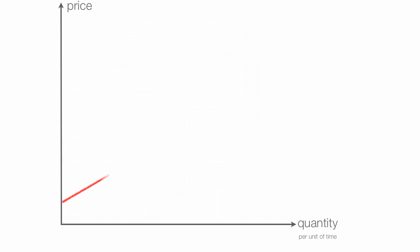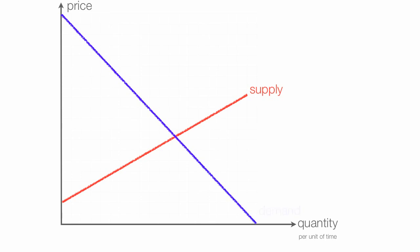I'll put price along the vertical axis and quantity along the horizontal axis. I'm going to put in a supply curve and a demand curve. Equilibrium is right there where that dot is, and I'll say that's a price of 8 and quantity of 6.